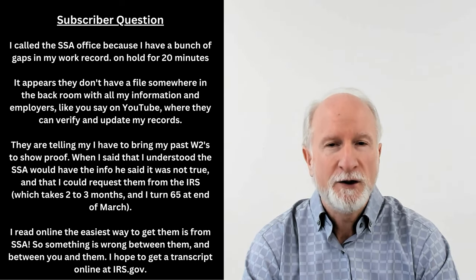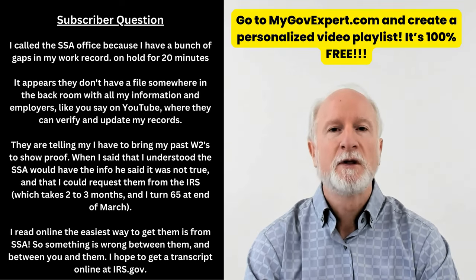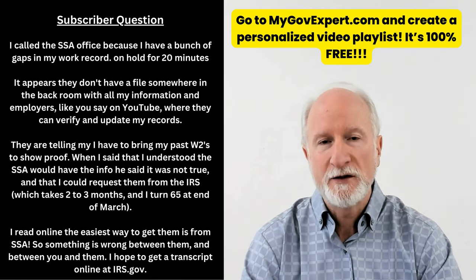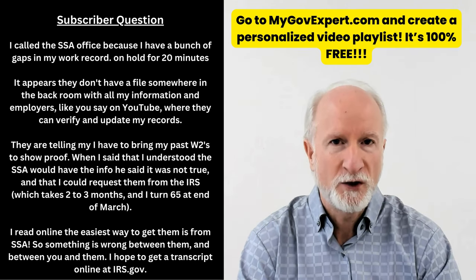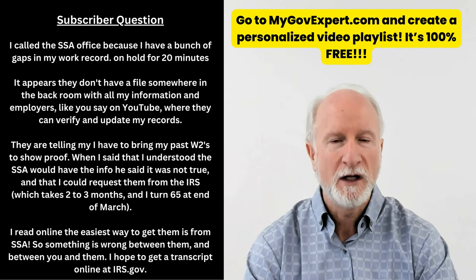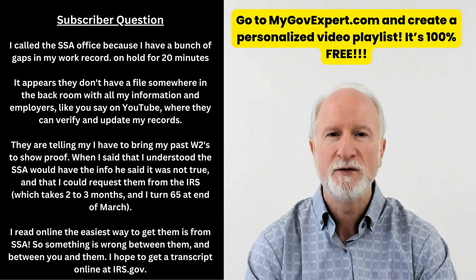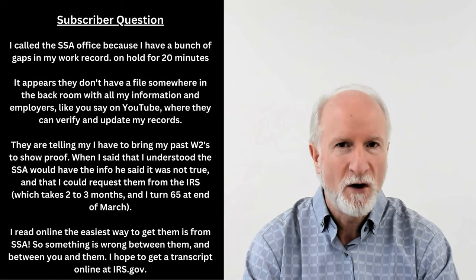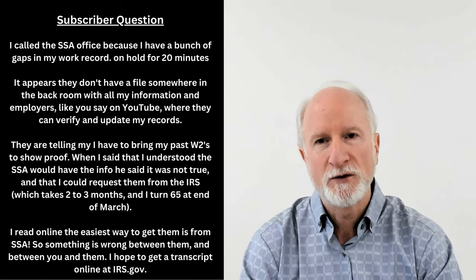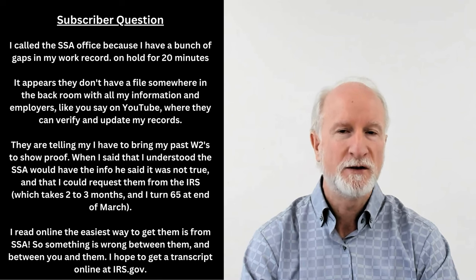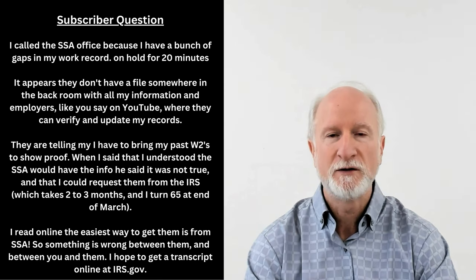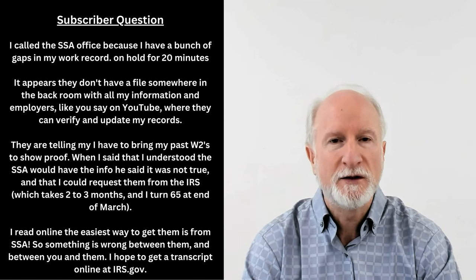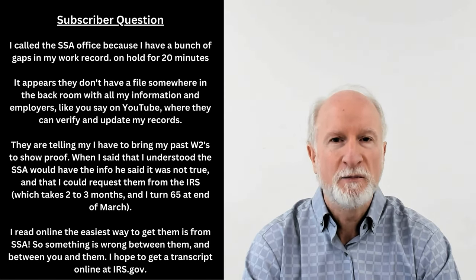If your employer issues a W-2, the employer notifies the IRS, and the IRS notifies Social Security. Somewhere along the line something happens — maybe the Social Security number is wrong when taxes are filed — and the earnings end up stuck in what Social Security calls the suspense file. It's not a physical file; it's in the computer system.